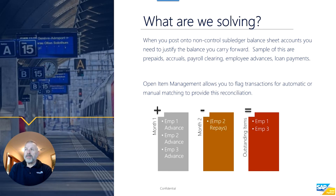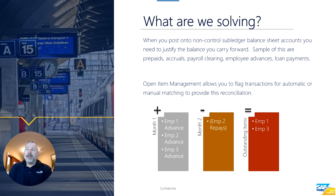In the following month, let's assume that only Employee 2 repaid those funds. If we advanced each of those employees a thousand dollars and one thousand dollars was refunded back, we would know that there's a two thousand dollar balance in that account. But without open item management, we wouldn't know that it refers to Employee 1 and Employee 3. That is a very simple example of how you can use open item management.